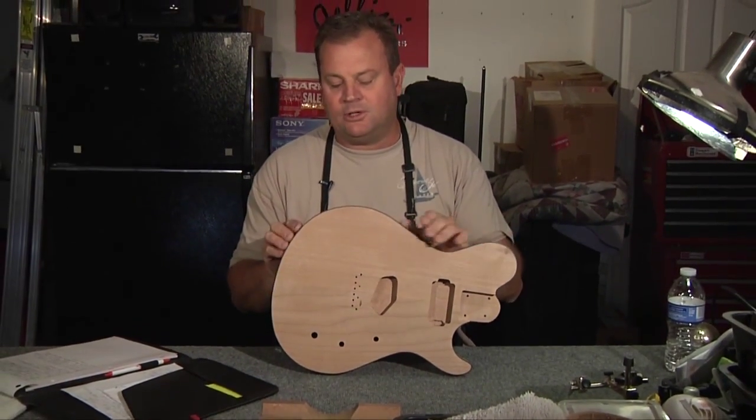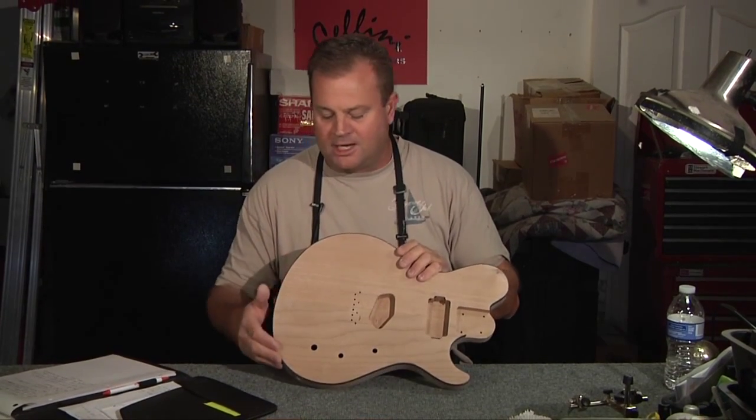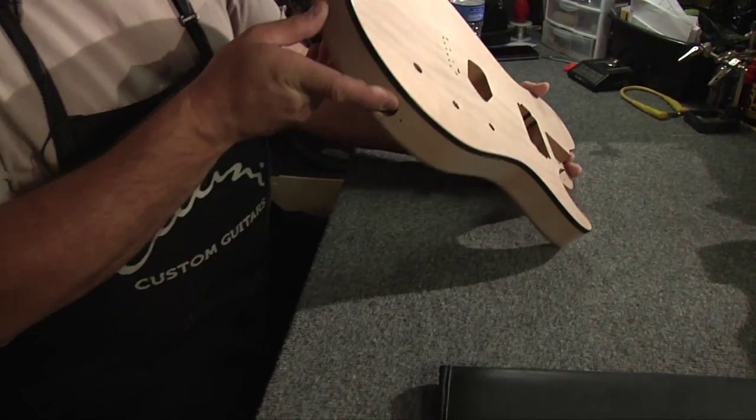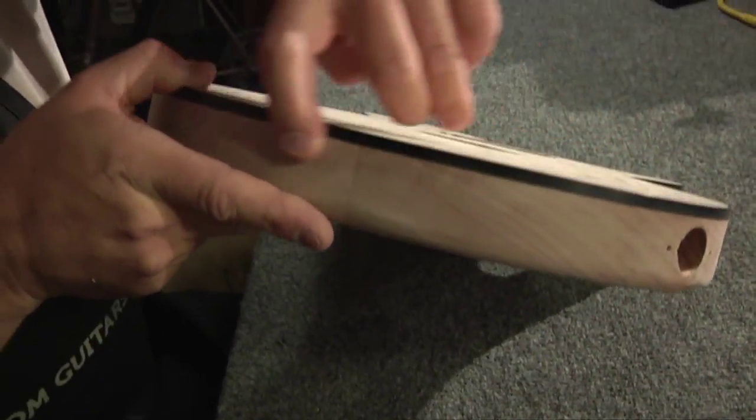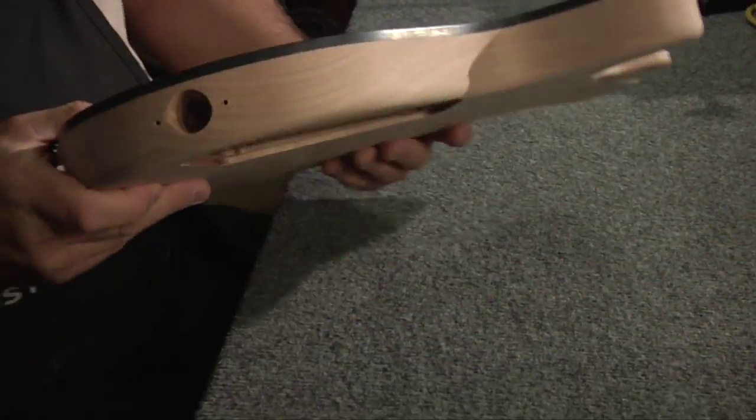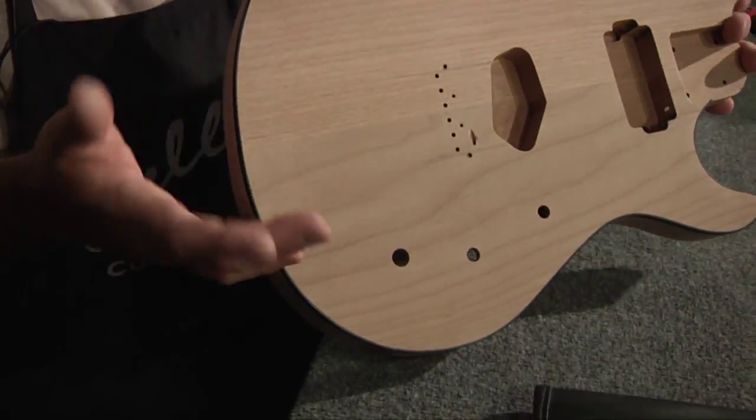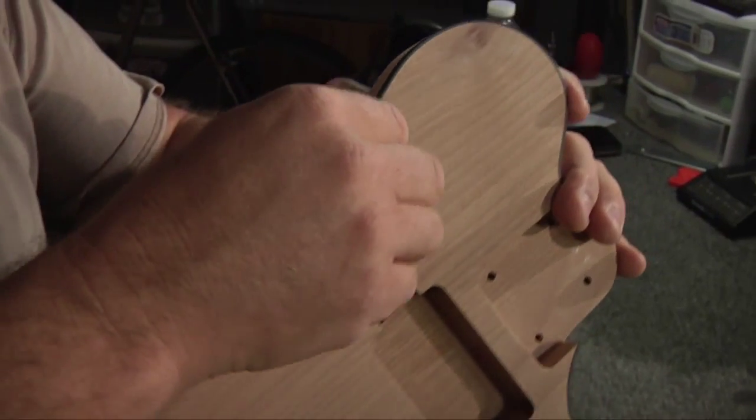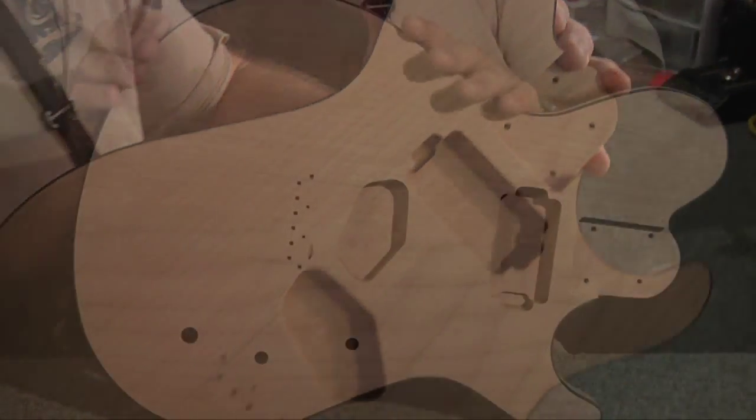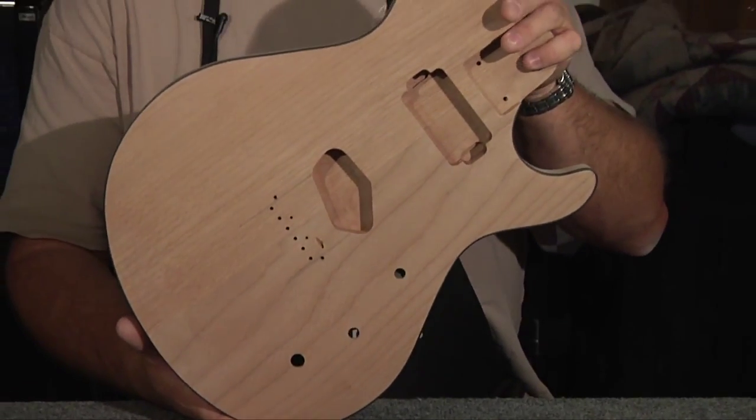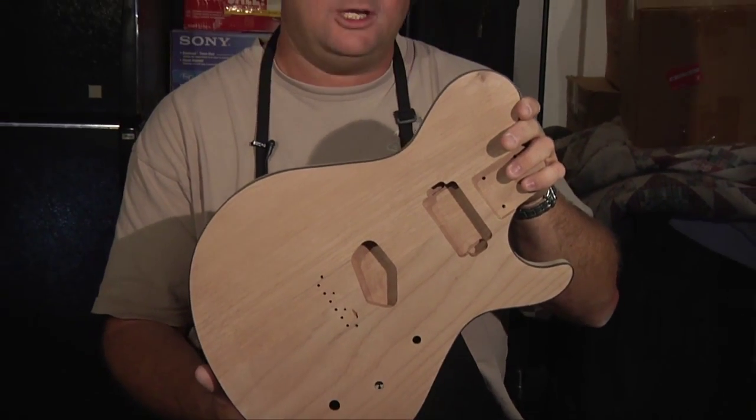Hey everyone, last episode we did the binding channel here, routed that on the routing table and glued the binding down and let that dry for 24 hours. Then I untaped it and scraped all the binding clean surface to the wood, blended it all in real well, sanded it down real smooth, and it's all finished now so the guitar is ready for hard finish.